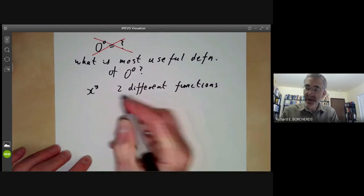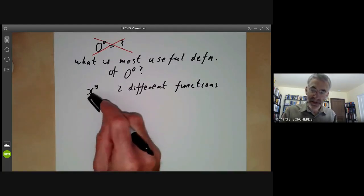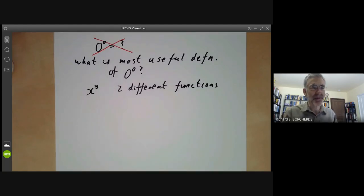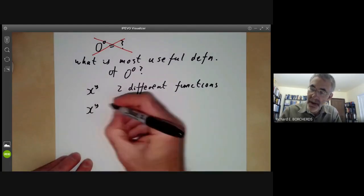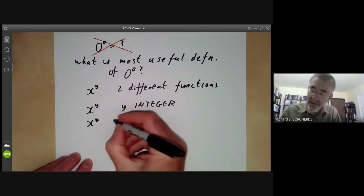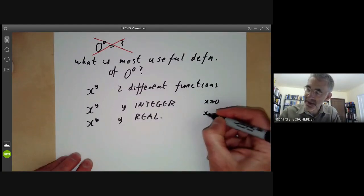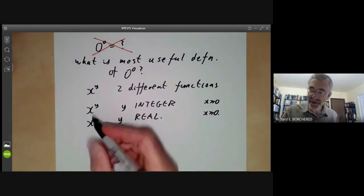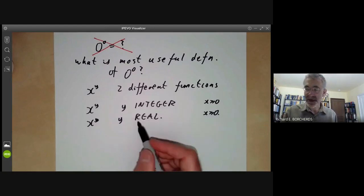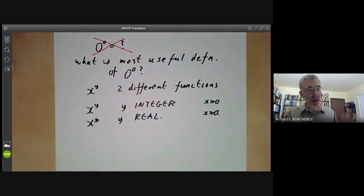We get a different answer for zero to the power of zero depending on which of these two different functions you're talking about. You don't usually notice that this is ambiguous because these functions are nearly always the same. The two different functions are x to the y for y an integer, and x to the y for y a real number. You may say that the integer case is really a special case of the real case, and nearly all the time you would be right — but every now and then this isn't quite true.